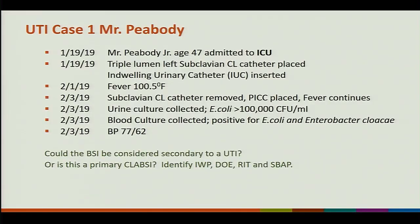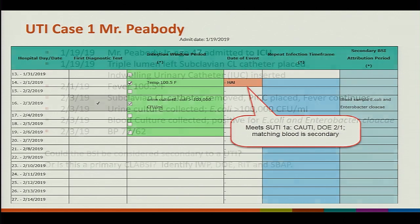Let's look at Mr. Peabody, who is age 47. He was admitted to ICU. He has a triple lumen central line and a urinary catheter. He had a fever on the 1st of February. He had the subclavian central line catheter removed, replaced with a PICC. The fever continues. The urine culture was collected — it's E. coli. We have a blood culture collected; it was E. coli and Enterobacter. He also has a blood pressure of 77 over 62.